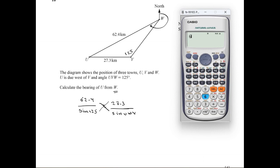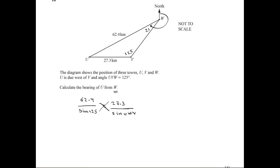27.3 times sine 125 divided by 62.4 equals 0.358. To find the angle, shift sine, answer equals 21. We can see that angle W equals 21 degrees.